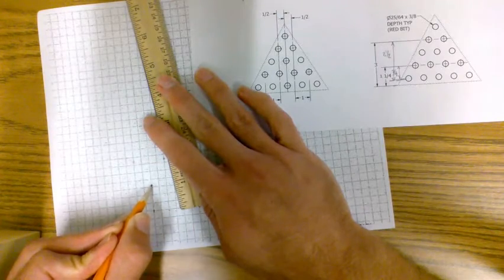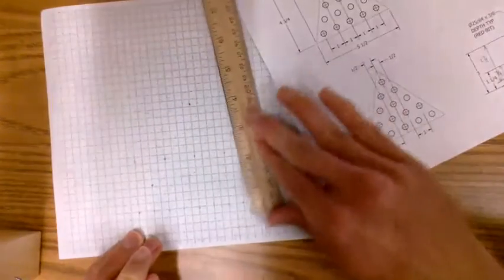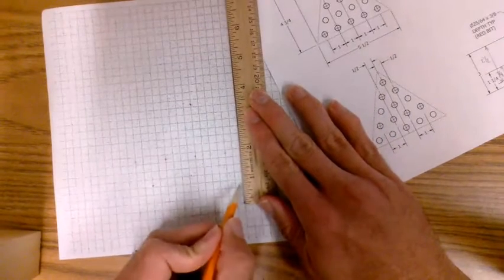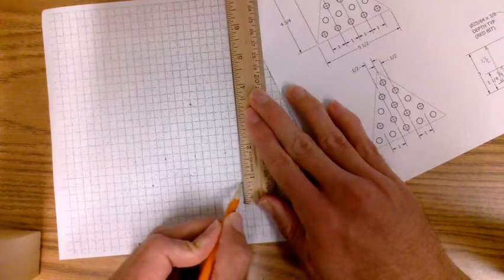And we're going to put a dot there for the center of that hole. We're going to come over to this side. We're going to come up three quarters of an inch.